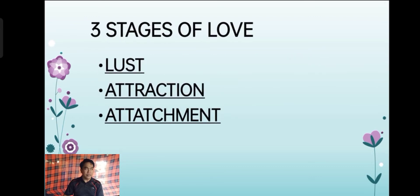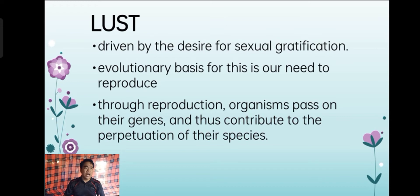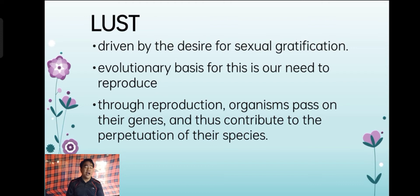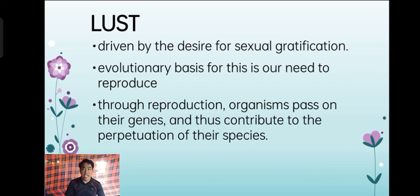There are three stages of love: first, lust; second, attraction; and third, attachment. When we talk about lust, it is driven by the desire for sexual gratification. The evolutionary basis for this is our need to reproduce. Through reproduction, organisms pass on their genes and thus contribute to the perpetuation of their species. Lust encompasses sexual intercourse between any individuals, because of the need for sexual gratification and reproduction.